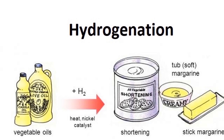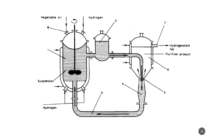Hydrogenation is used in industry to convert unsaturated oils such as sunflower oil into partially saturated fats by breaking some of the double bonds and adding two hydrogen atoms, which increases the boiling point of the oil and converts it into margarine. In this process, vegetable oils are fed into a chamber, passed over hydrogen and a catalyst, and the formed margarine is collected as the purified product.